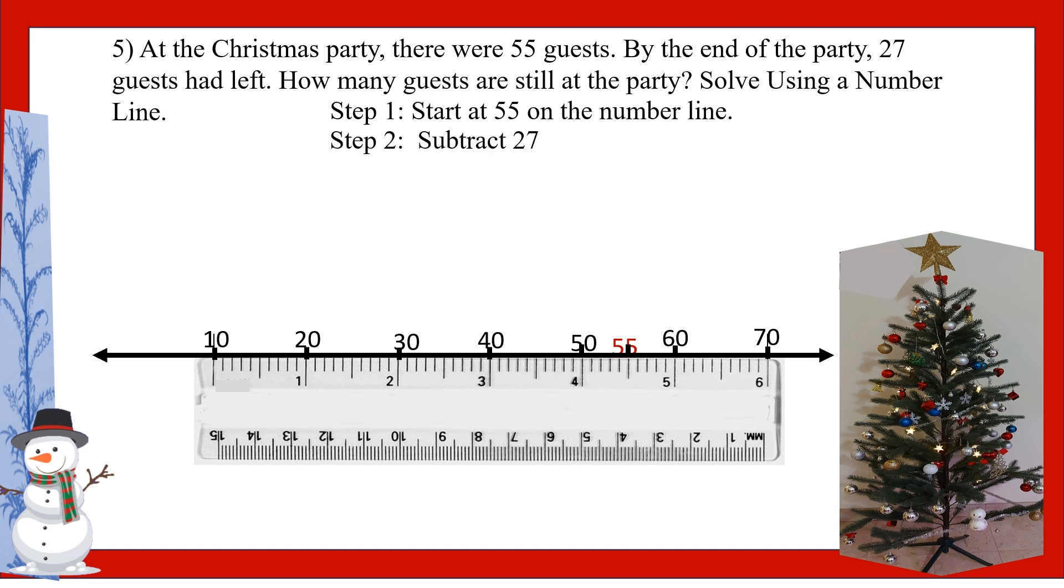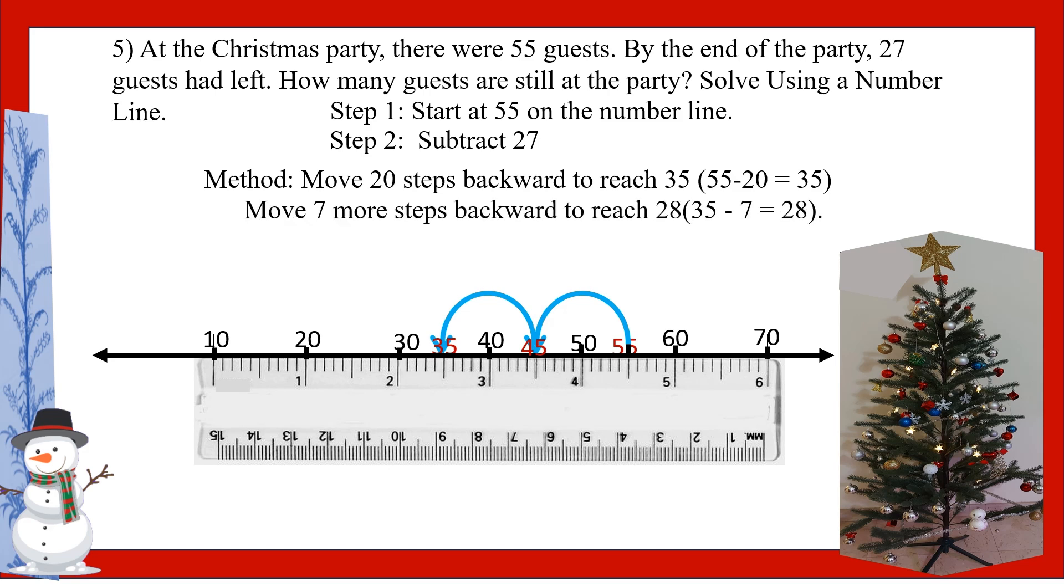Step 2 is you have to subtract 27. So for that, move 20 steps backward to reach 35, then move 7 more steps backward to reach 28. So the answer is 28 guests are still at the party.